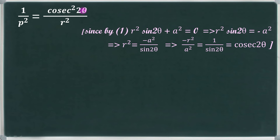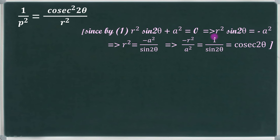Now eliminate theta using equation number 1. From r² sin 2θ + a² = 0, we get sin 2θ = −a²/r². Therefore 1/sin 2θ equals cosec 2θ = −r²/a². Squaring, cosec² 2θ equals r⁴/a⁴.